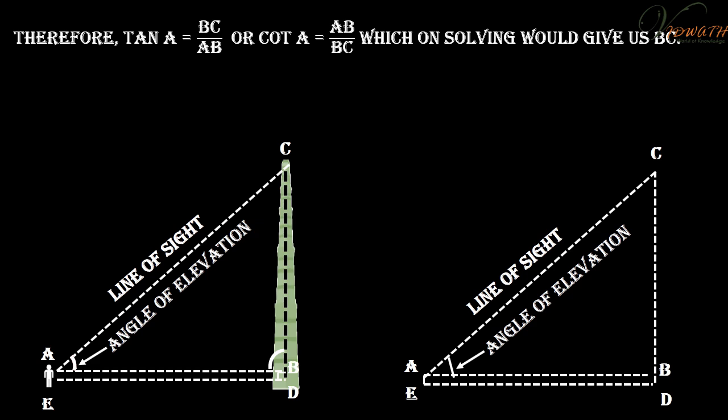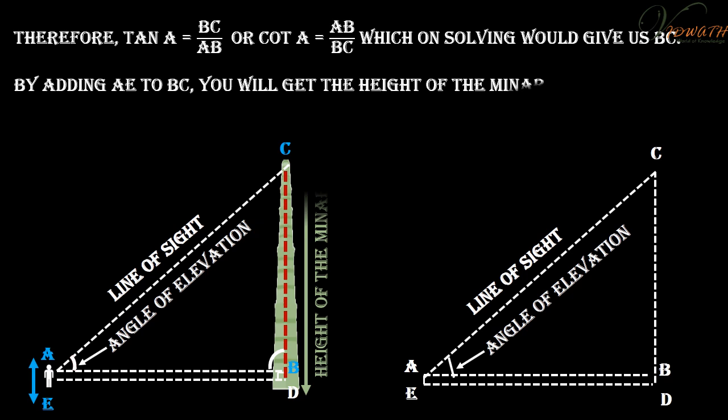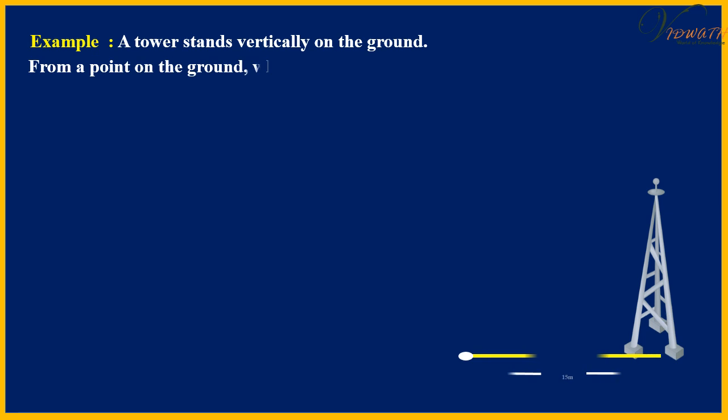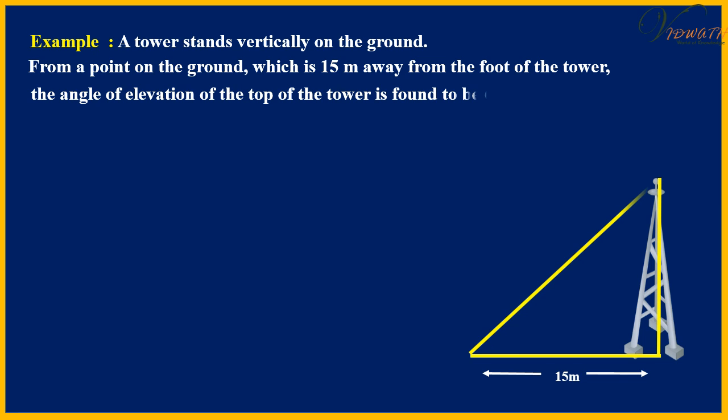By adding AE to BC, you will get the height of the minar. Example 1: A tower stands vertically on the ground. From a point on the ground which is 15 meters away from the foot of the tower, the angle of elevation of the top of the tower is found to be 60 degrees. Find the height of the tower.